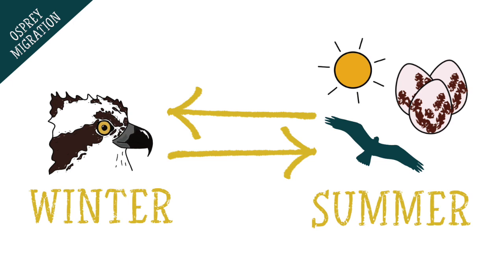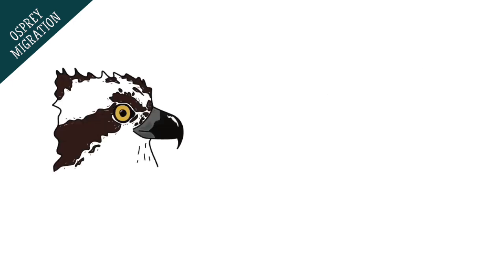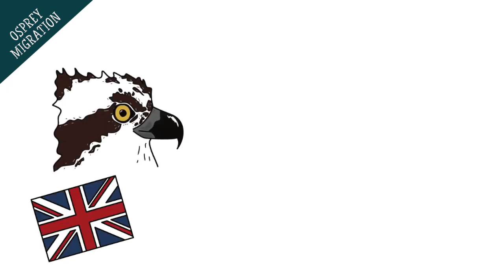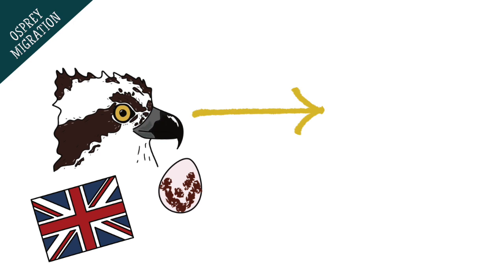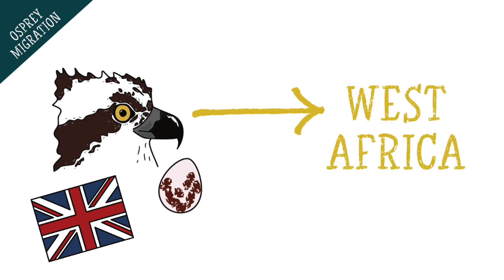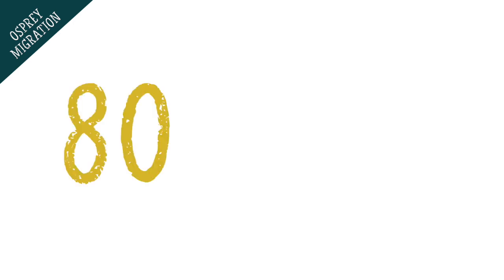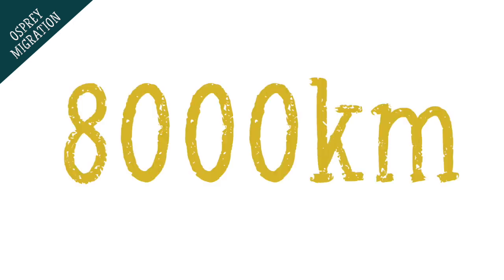As we've learned before, ospreys that come to the UK to breed most often spend their winters in West Africa, in countries such as the Gambia or Senegal. On average these journeys add up to over 8,000 kilometres per year.